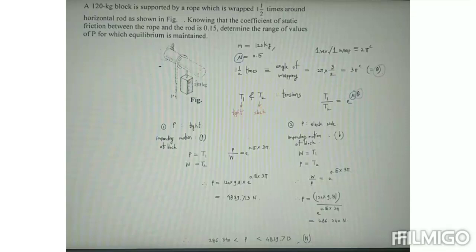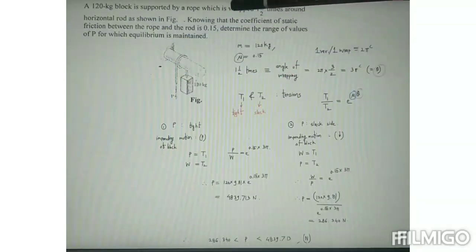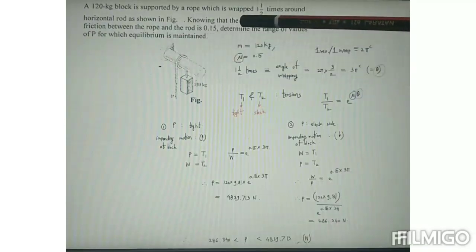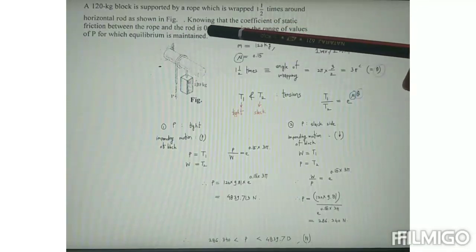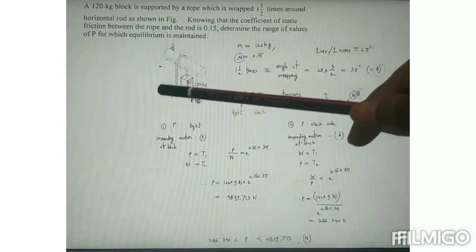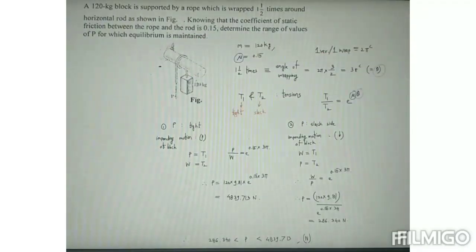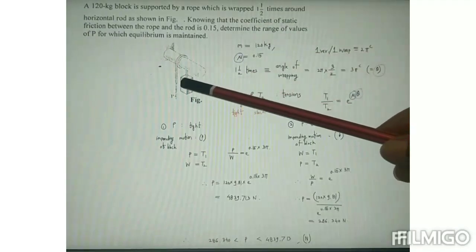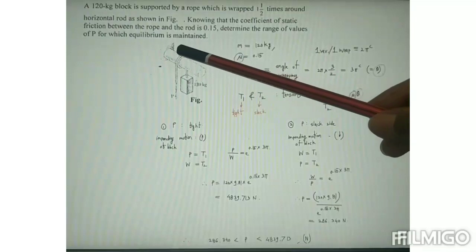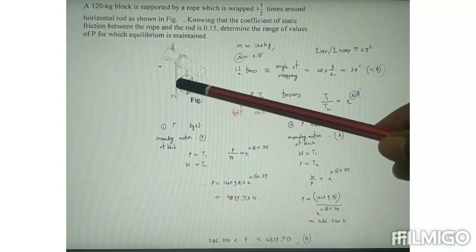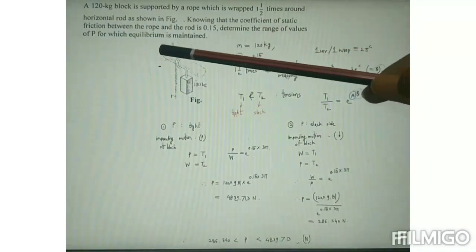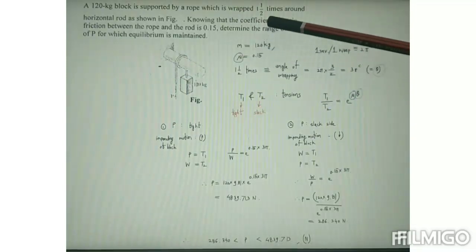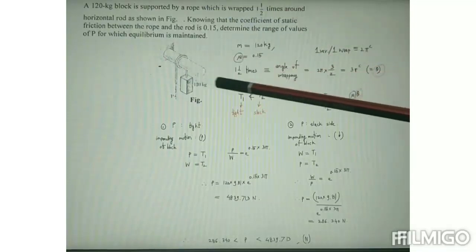Now let us solve one problem in belt friction. A 120 kg block is supported by a rope which is wrapped one and a half times around a horizontal rod, as shown in the figure. The coefficient of friction between the rope and rod is 0.15. Determine the range of values of P for which equilibrium is maintained. The mass of the block is 120 kg, μ = 0.15, and the rope is wrapped one and a half times around the horizontal rod.